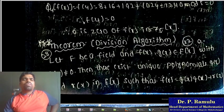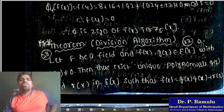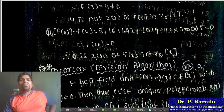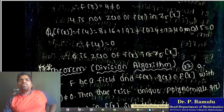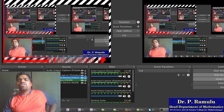The zeros of f(x) in Z_5 are: only 0. Zero is the only zero of f(x) in Z_5[x]. This ends Lecture 6. Thank you for watching.